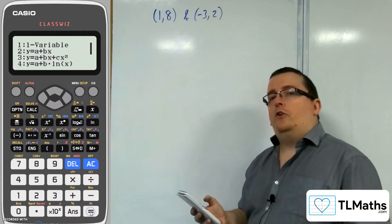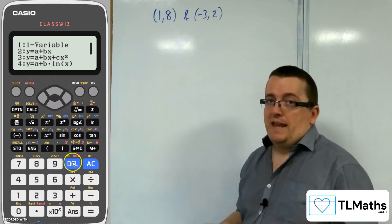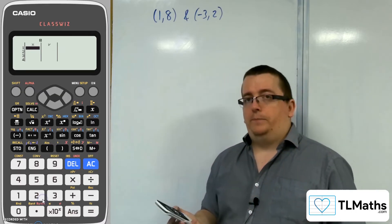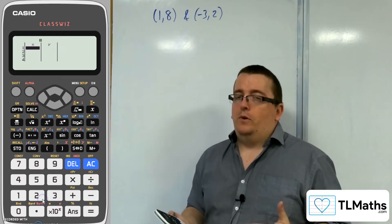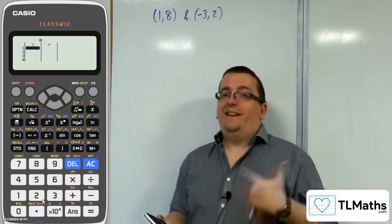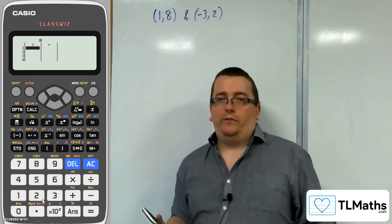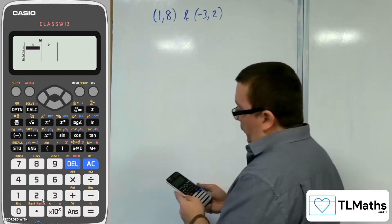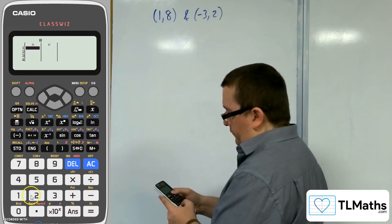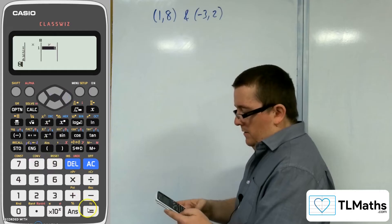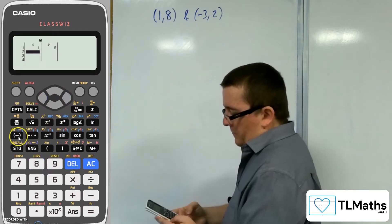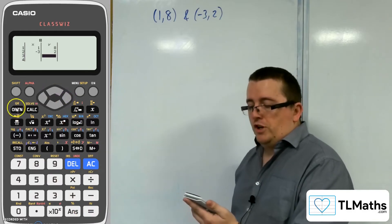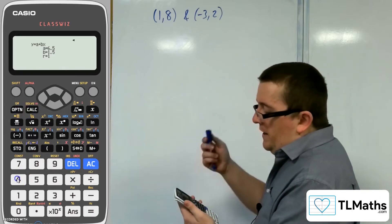What we're going to do is go to menu and then go to number 6 for statistics, strangely. What you'll find in statistics is option number 2, y = a + bx. Effectively, what you should get is a table for x's and y's. Really, what I'm going to do is work out the regression equation, the least squares regression line, for two points, which will precisely be the equation of the line going through those two points. I'm going to type in the 1 and then the 8, and then the -3 and the 2.